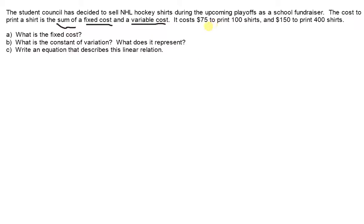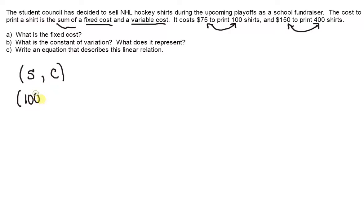It costs $75 to print 100 shirts, and it costs $150 to print 400 shirts. When we read these questions, we have to make sure we connect these two values. So 75 and 100 go together, and 150 and 400 go together. If we let S represent the number of shirts and C represent the cost, then as ordered pairs, these would be (100, 75) and (400, 150).